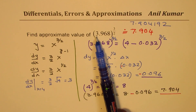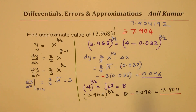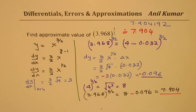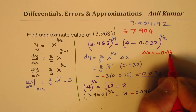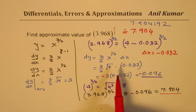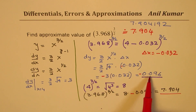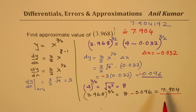Basically, you have to get a perfect point — which was 4 for us — and 4 to the power of 3 over 2 was 8. Delta x is minus 0.032, and so the gradient multiplied with this minus gives us 0.096 as a negative value. Take away this value from 8 and get your answer. Only these two steps can actually give you the right answer to 3 decimal places.